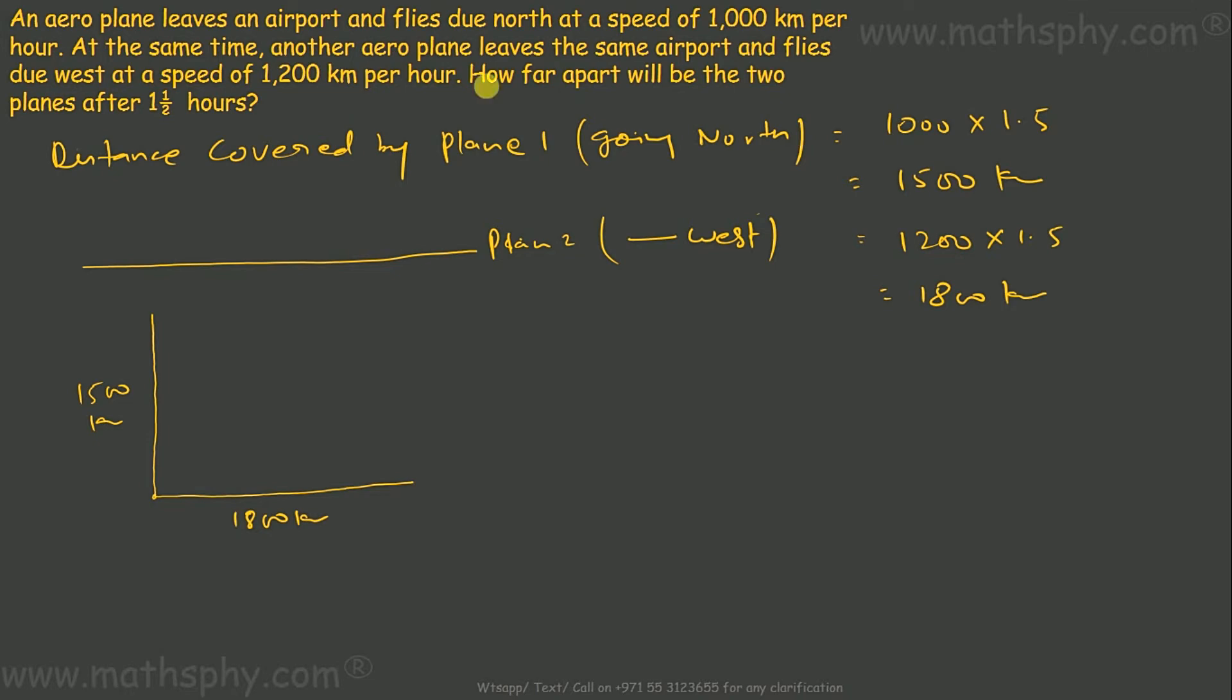We need to know how far apart will be the two planes after one and a half hours, which means what is this distance here? If I take this as A, B and C, this is 90 degrees. I need to know this, so this will be hypotenuse because ABC is a right angle triangle.